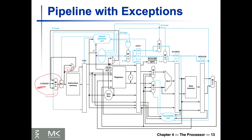The other things added are the two registers: SCAUSE, containing the reason for the exception, and SEPC, containing the specific address where the exception occurred. Now let's look at an example of how we're going to feed the handler address when an exception happens.